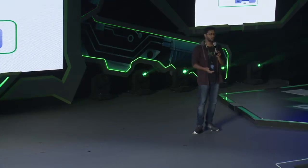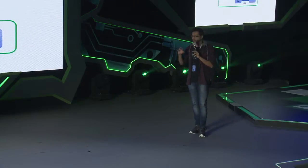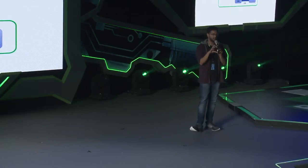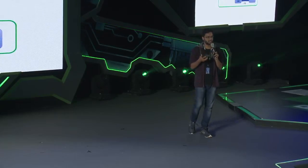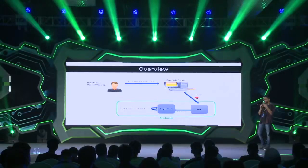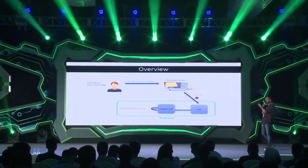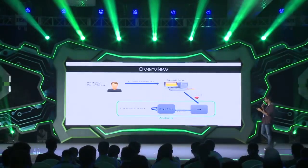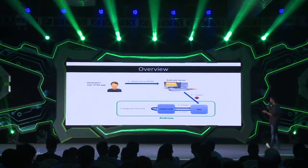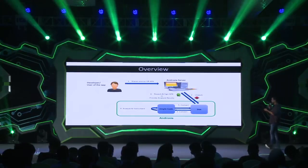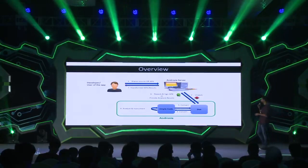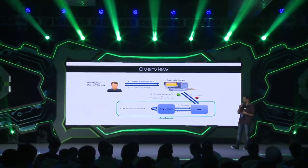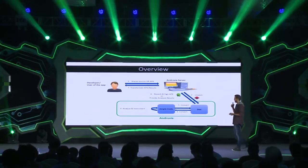Jimple has only 15 statement types, making it easier to analyze. This Jimple code is analyzed by Androsia, code instrumentation happens, and then the Jimple is converted back to Dalvik bytecode. The Dalvik bytecode is then repackaged and signed. Alternatively, we could just provide the analysis results to the user. This is the entire flow of how you would use Androsia.